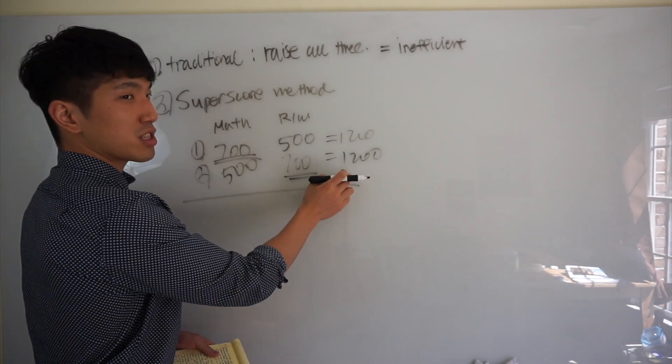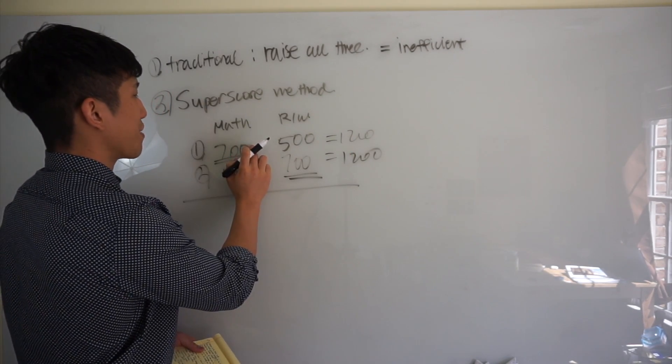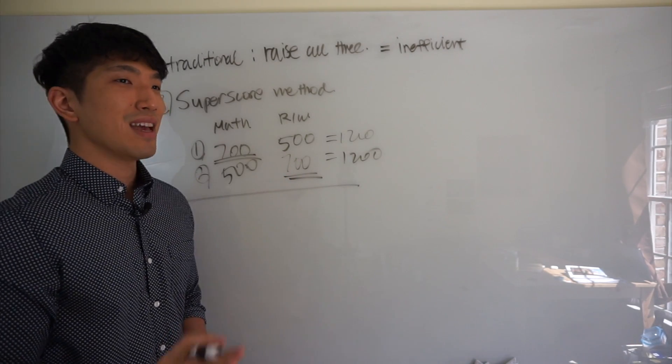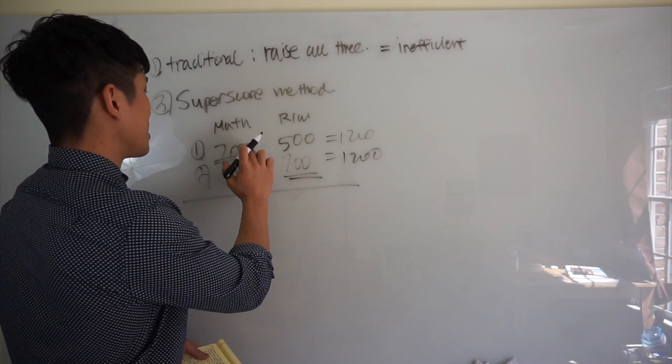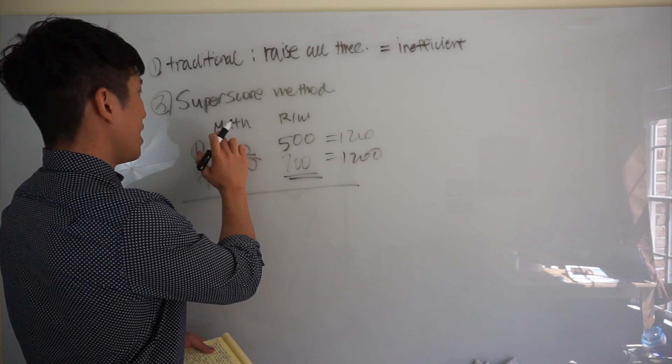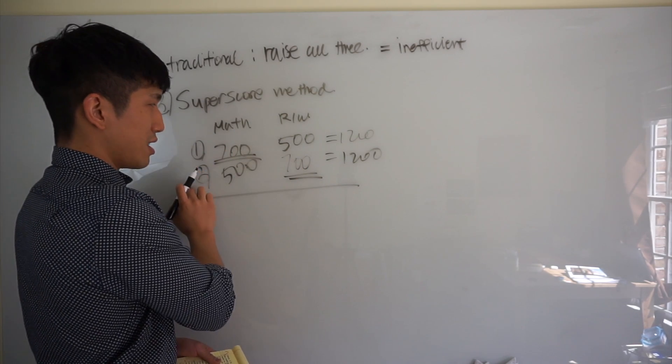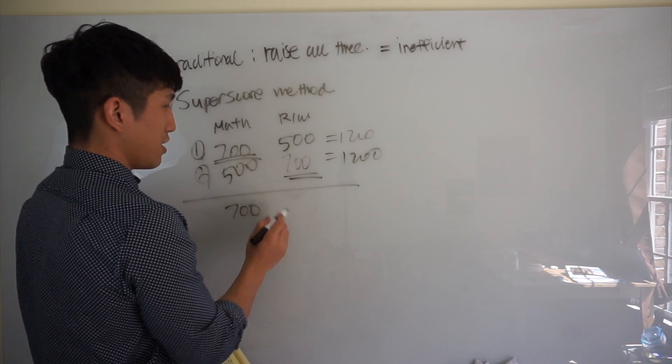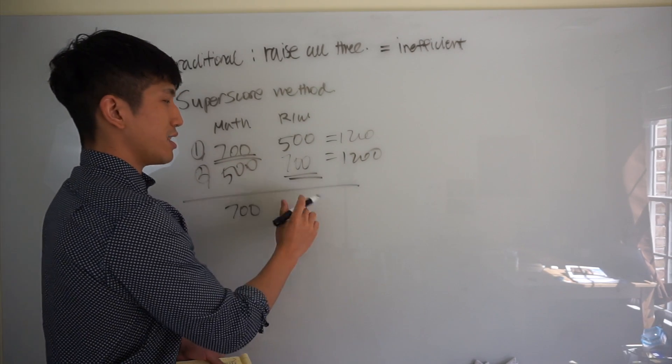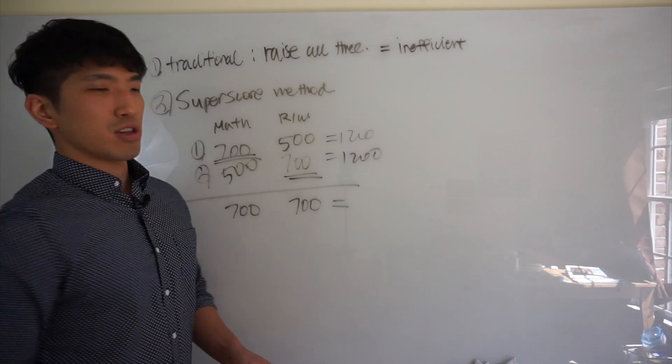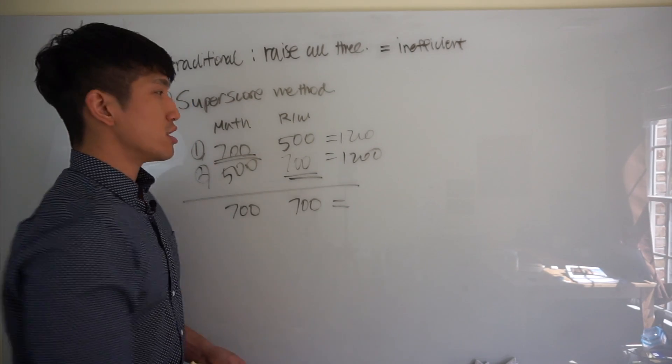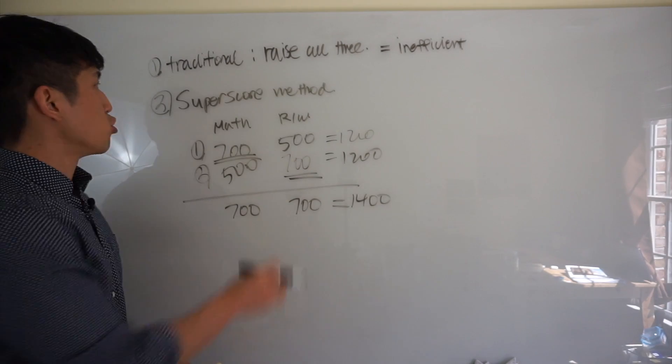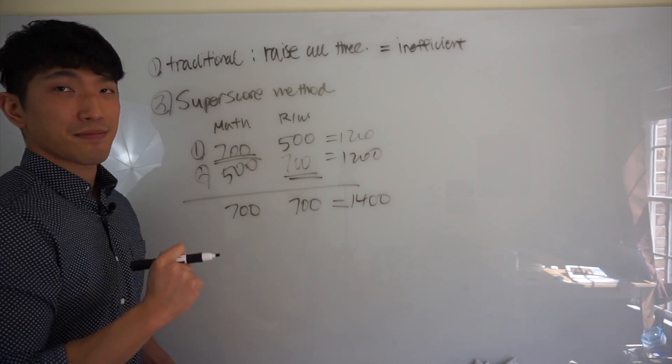And what SuperScore does is when you apply to colleges, they're not going to look at these 1200, but they're going to look at the highest section score from each of your exams. Actually, let me rephrase that. They're going to look at the highest score from each of your sections, whether it's from the same exam or not. So they're going to take the highest score from math, which is 700, and highest score from reading and writing, which is 700. So essentially, when you apply to colleges, your SAT score is 1400. Does that make sense? So SuperScore, pick the highest score and that's your score.